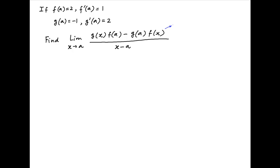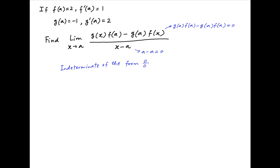As x tends to a, the numerator in the given limit tends to g(a)·f(a) minus g(a)·f(a), which is equal to 0, and the denominator also tends to 0. Therefore, this is indeterminate of the form 0/0, and so we apply L'Hôpital's Rule. The given limit is equal to the limit as x tends to a of...